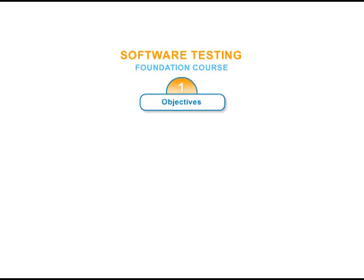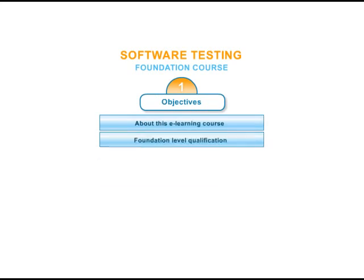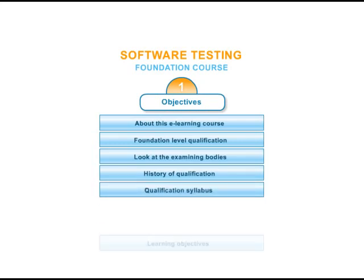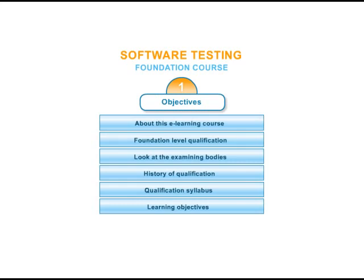In this introductory module we will describe the structure of the e-learning course and highlight some of the useful features. Outline the foundation level qualification and look at the examining bodies associated with it. Review the history of the qualification thus far. Describe the syllabus on which this course is based and clarify the structure of the learning objectives. And briefly review the make-up of the foundation examination itself.